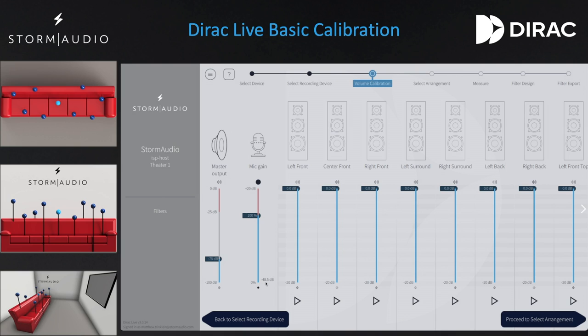Therefore, if the ambient background noise level of a room is between minus 48 to minus 50 dB, we will aim to calibrate each speaker to approximately minus 18 to minus 19 dB. Now adjust the master output to a good starting level. By default, the Dirac Live tool will limit you to minus 25 dB unless you override the protection level by clicking on the red lock icon. Until the timer runs out, you will be able to adjust the level above minus 25 dB if needed.